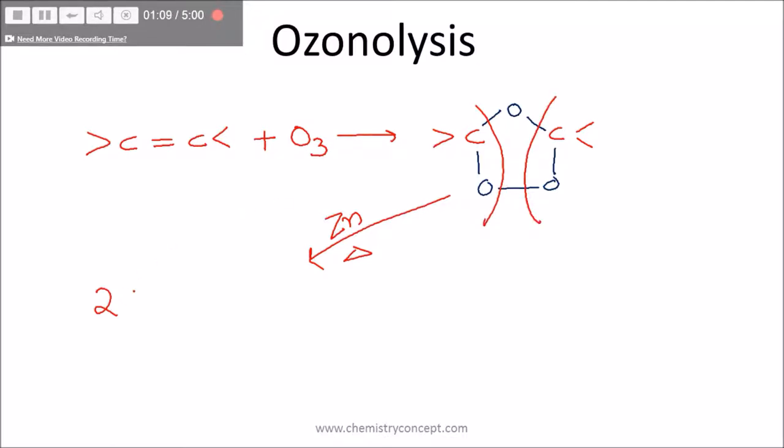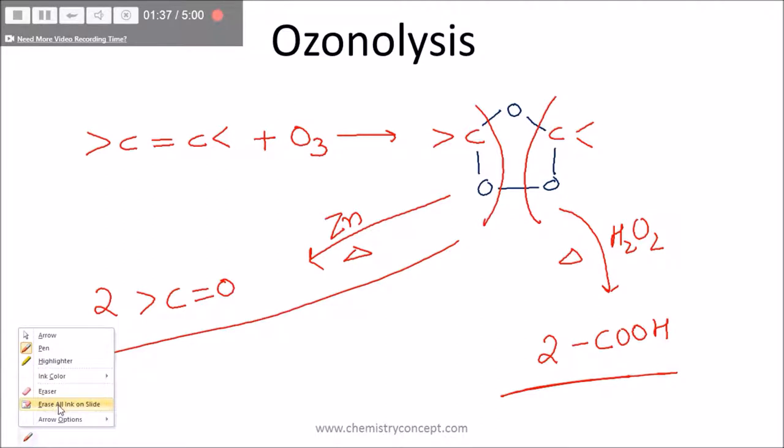And this will give me two moles of aldehyde or ketone. Or I can heat this ozonide now with H2O2 hydrogen peroxide, and this will give me two moles of carboxylic acid. Okay, so there are two ways. If I use zinc, it is called a reductive ozonolysis. If I use H2O2, it is called an oxidative ozonolysis.